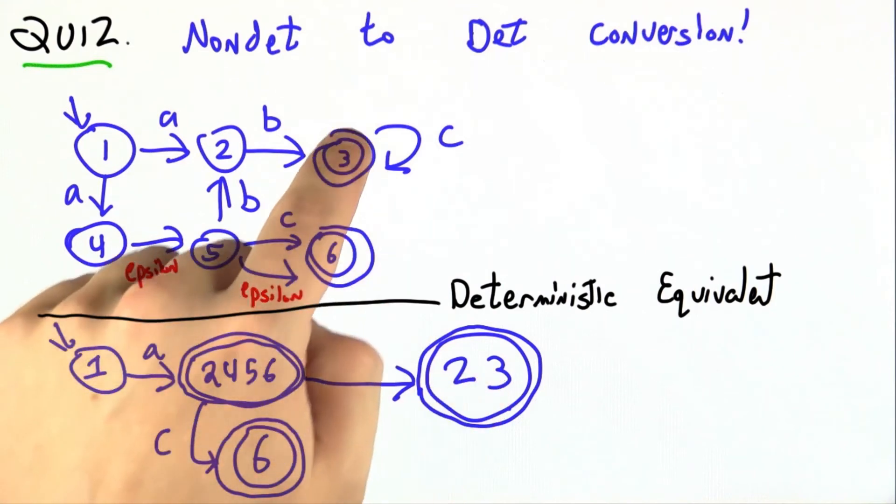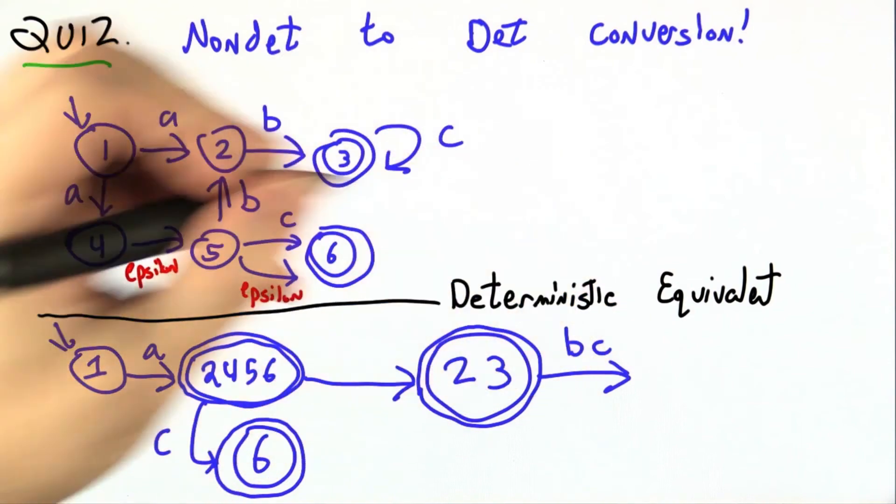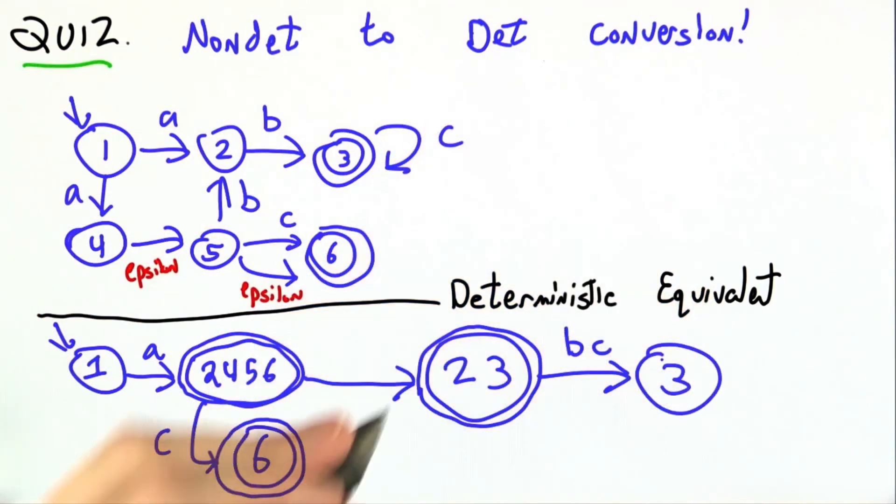If I'm in 2 or 3 and I see a C, I must really have been in state 3, and I stay in state 3. So either on B or C, we end up in just state 3, which is also an accepting state.